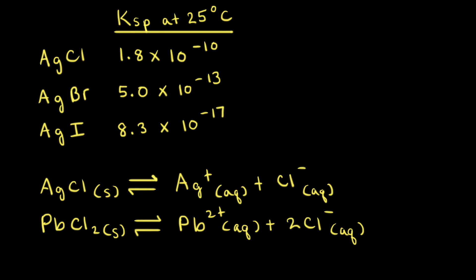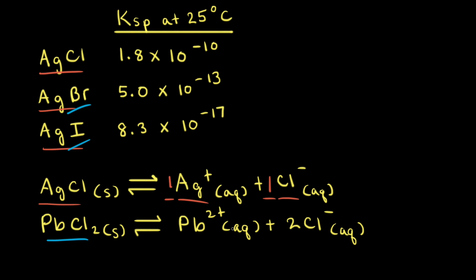Ksp values can be used to predict the relative solubilities of salts that produce the same number of ions in solution. For example, silver chloride, silver bromide, and silver iodide all produce two ions in solution — one Ag+ ion and one halide anion for a total of two ions. However, a salt like lead chloride produces three ions in solution: one Pb2+ ion and two chloride anions. Since lead chloride produces three ions, we can't determine its solubility relative to the other three by comparing Ksp values.